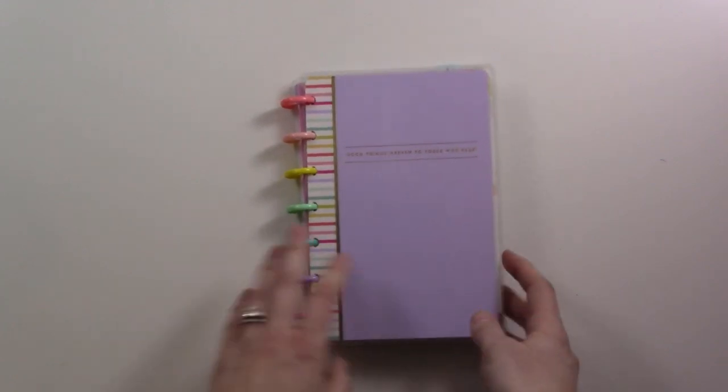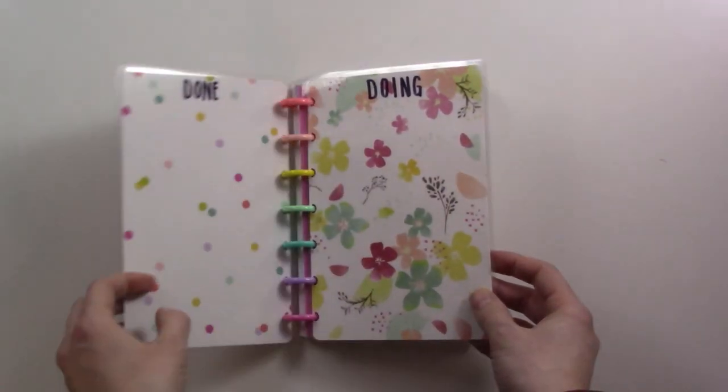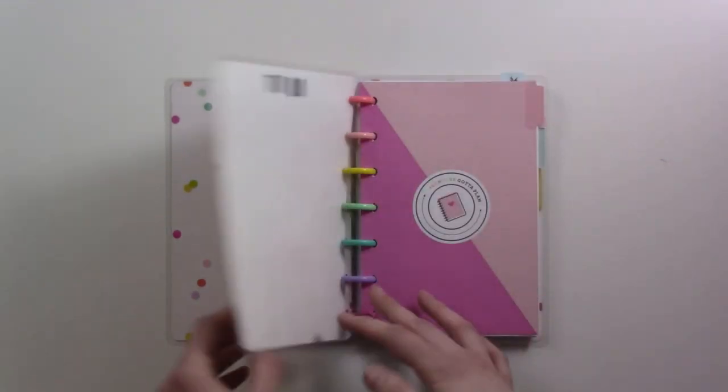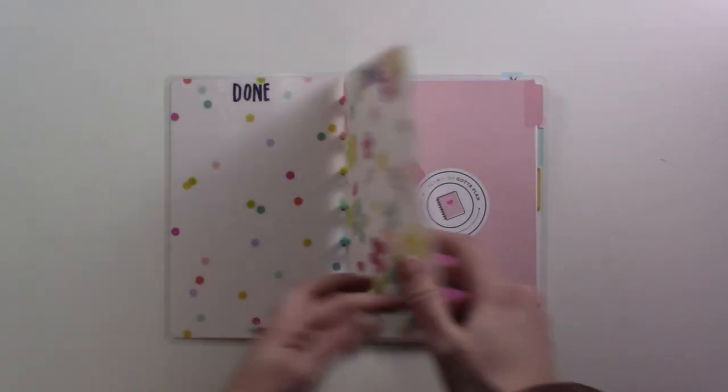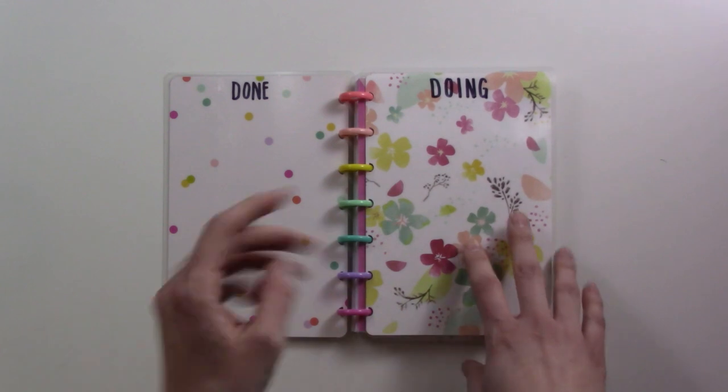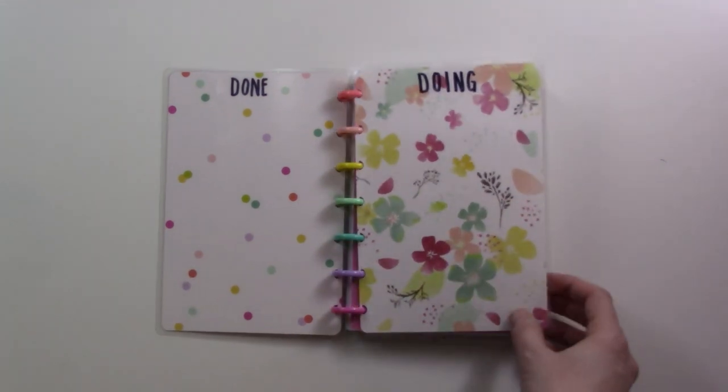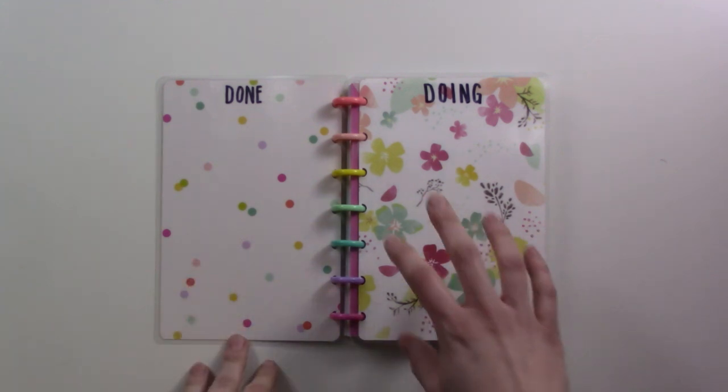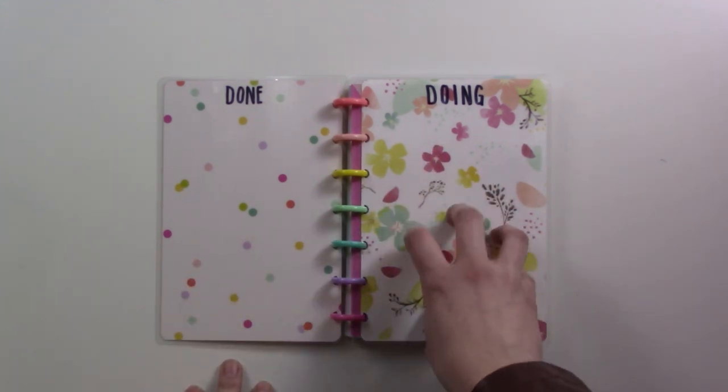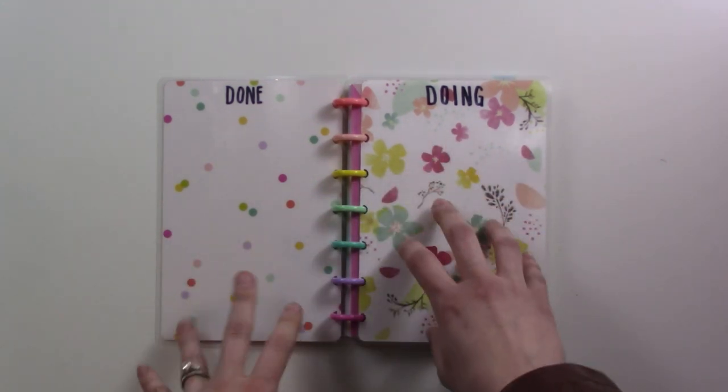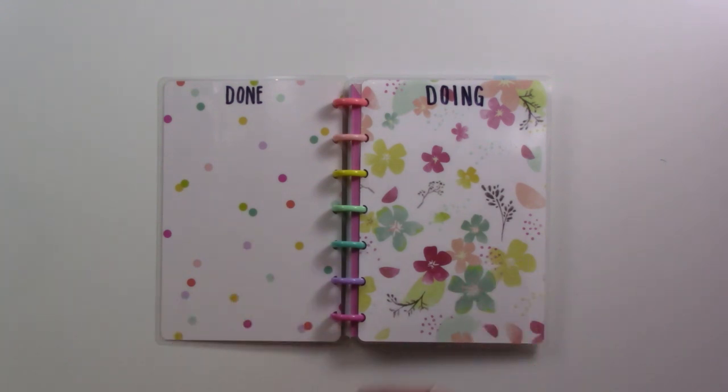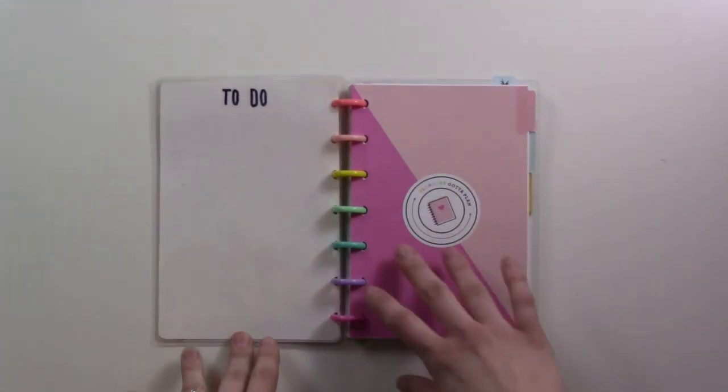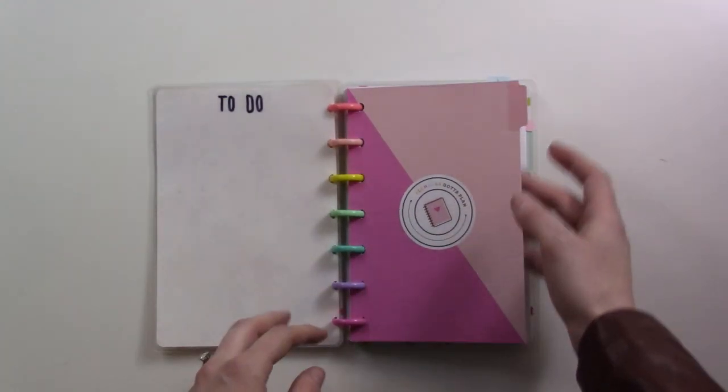So here we are, this is my Happy Notes mini. I created a dashboard at the very front—this is a Kanban board for me with to-do, doing, and done. Sometimes in busy weeks or if I feel like I really need an extra productivity tool, I'll use this with sticky notes. I've done that for a few weeks, but the downside is it takes setup at the beginning, so this current week I'm not using it. Instead I'll show you what we're doing.